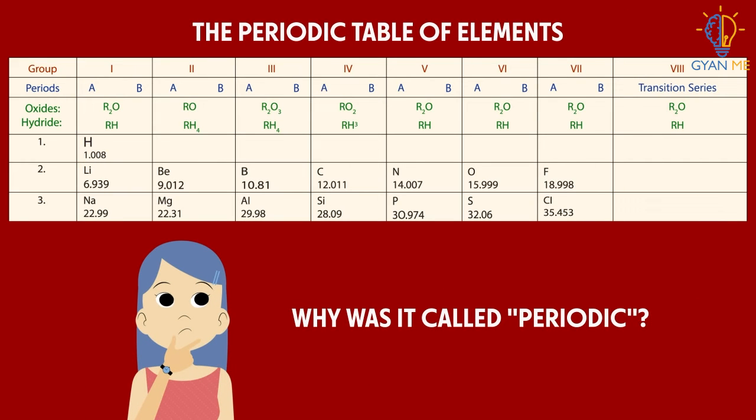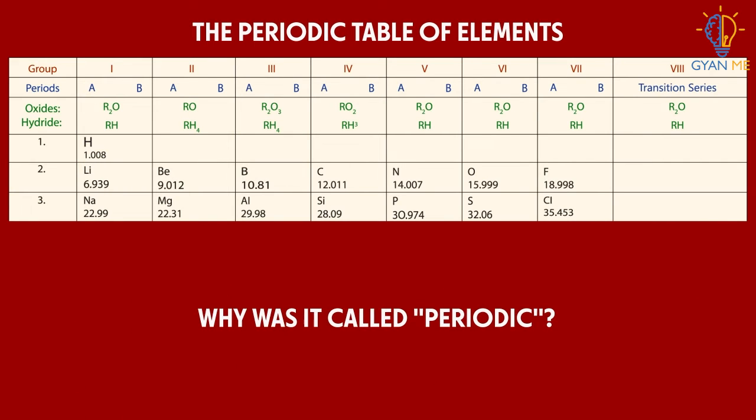And why was it called periodic? Because we find the properties of each element repeat down the table.